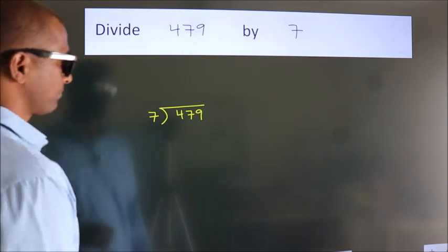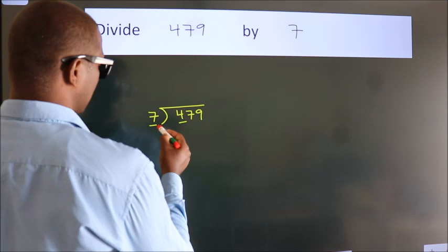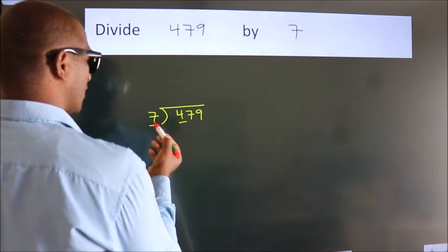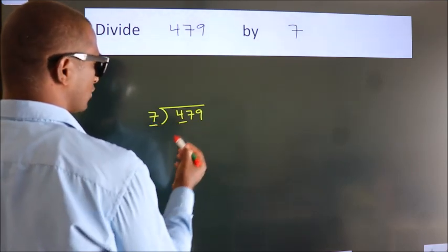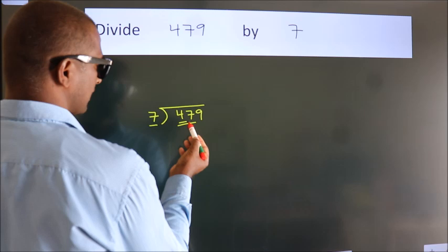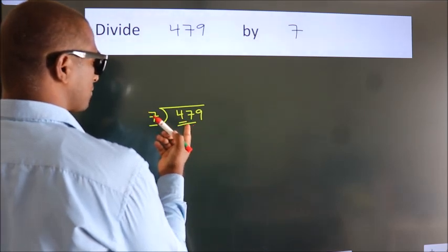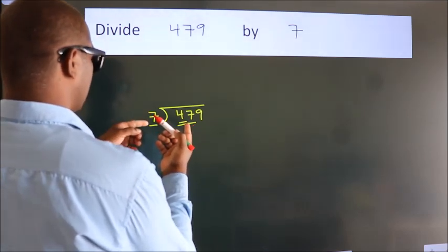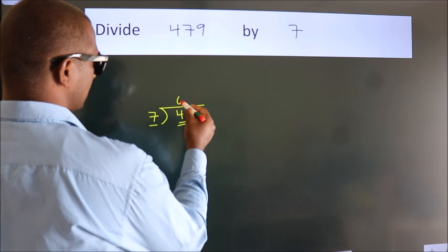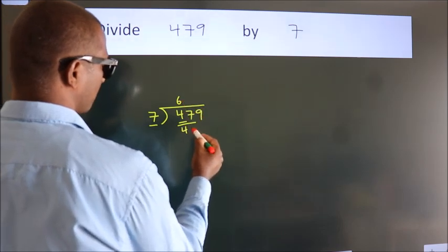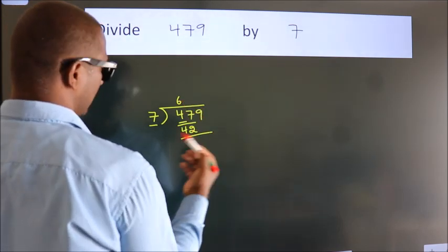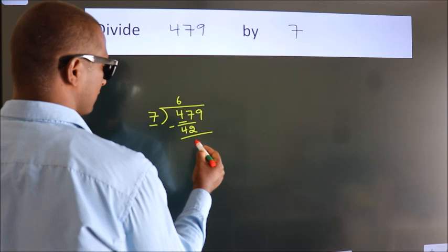Next. Here we have 4, here 7. 4 is smaller than 7, so we should take 2 numbers: 47. A number close to 47 in the 7 table is 7 times 6, which is 42. Now we should subtract. We get 5.